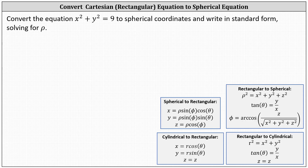We're asked to convert the Cartesian or rectangular equation x squared plus y squared equals nine to spherical coordinates and write in standard form solving for rho. I'm going to show two ways of performing the conversion.